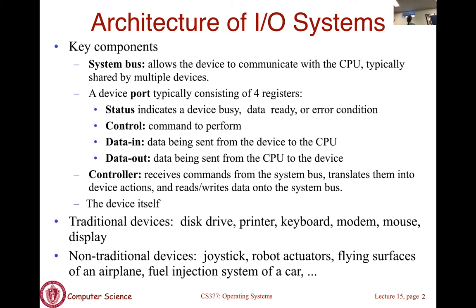Those are the four registers. Each device also has a controller, which receives commands from the processor written to the control register and then translates them to device actions. We are going to cover IO concepts very broadly, applying to all kinds of devices — disk, printers, keyboard, mice, displays, as well as non-traditional IO devices such as joysticks or touch surfaces.